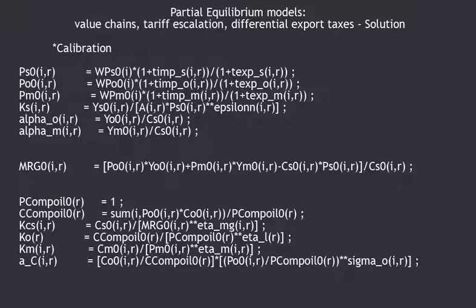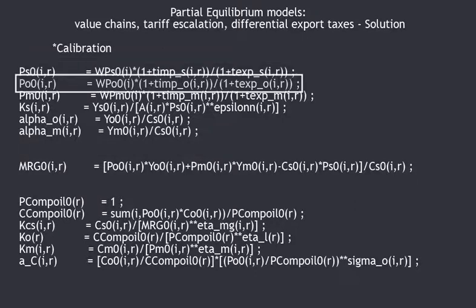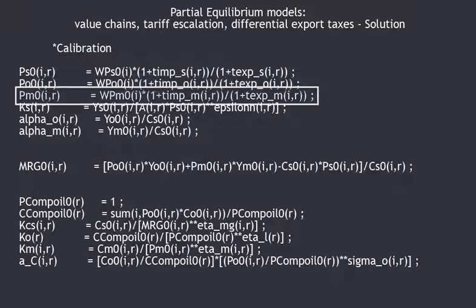For example, you have entered data on world prices, import duties and export taxes. So you can calibrate the initial local prices of seeds, oils and meals — giving you PS0, PO0 and PM0.